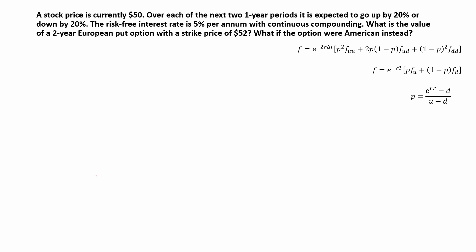The exercise reads: a stock price is currently $50. Over each of the next two one-year periods, it's expected to go up by 20% or down by 20%. The risk-free interest rate is 5% per year with continuous compounding. What's the value of a two-year European put option with a strike price of $52? And what if the option were American instead? Let's first treat this as a European put option.